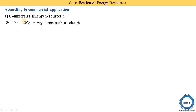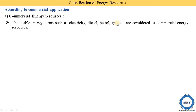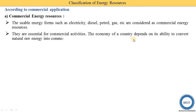The last classification is according to commercial application. The first type is commercial energy resources. Usable energy forms such as electricity, diesel, petrol, and gas are considered commercial energy resources — they are essential for commercial activities. The economy of a country depends on its ability to convert natural energy into commercial energy. Commercial means we can buy the energy resource: we can buy electricity, diesel, petrol, and gas — these are called commercial energy resources.